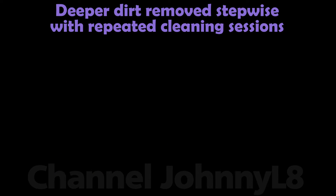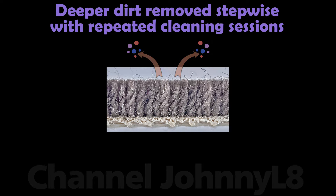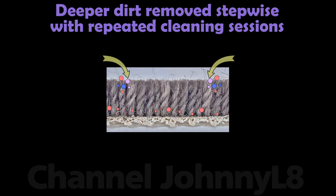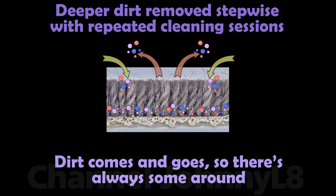Deep cleaning is equivalently achieved with repeated normal cleaning sessions, which reduces deeper particle concentration in a stepwise fashion. But of course, particles are always being reintroduced in daily living, increasing their concentration in the carpet. So there's a continuous flux of particles to and from a carpet, and it'll never be without some dirt. Vacuum cleaning is all about keeping dirt to a range of minimal acceptable concentrations.